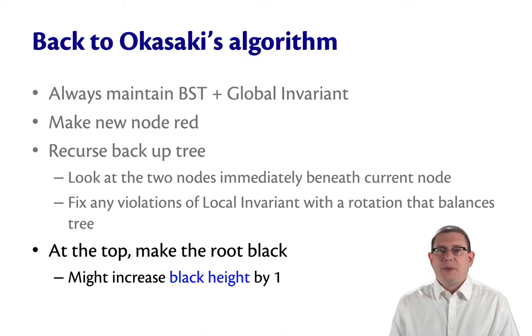So let's finish off Okasaki's algorithm. We went ahead and colored the new node red. We recursed our way back up the tree, balancing as we went. And then when we get to the very top, the last step of his algorithm is to make the root black. Because it's possible that we rebalanced and pushed a red node up to the root. If we do recolor a red node at the root to be black as the last step here, that will increase the black height of the tree by one. The black height is the number of black nodes on any path through the tree. This is the only place in the entire algorithm that the black height of the tree is allowed to increase.